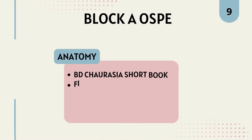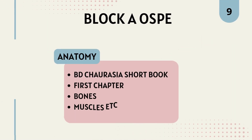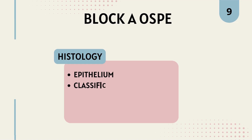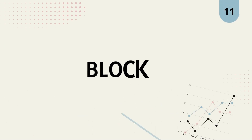For anatomy, you should have a good grip on Giri Chaurasia's short book, which you've been using for Block A. The first chapter is important, plus chapters related to bones and muscles. Examiners sometimes also ask you to name a few lymphoid organs. For histology, you should know about the epithelium, its different types, and its distribution throughout the body.